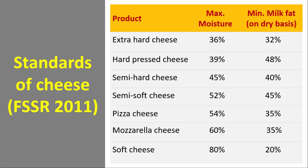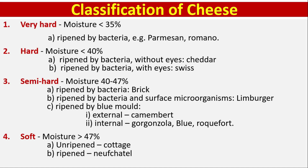Standards of cheese according to FSSAI 2011: two factors are taken into account — maximum moisture content and minimum milk fat. Classification of cheese: Very hard — moisture content less than 35%; ripened by bacteria. Examples: Parmesan and Romano cheese.